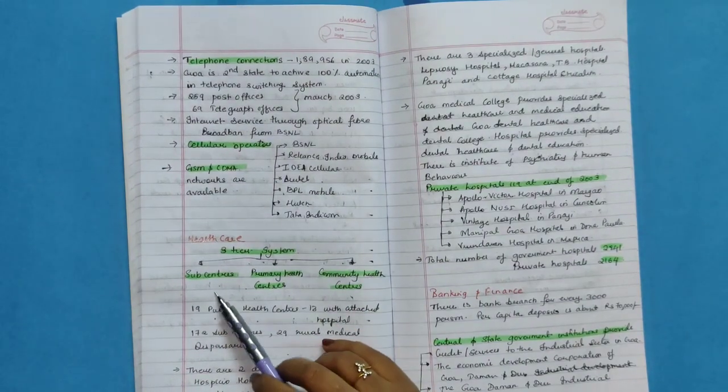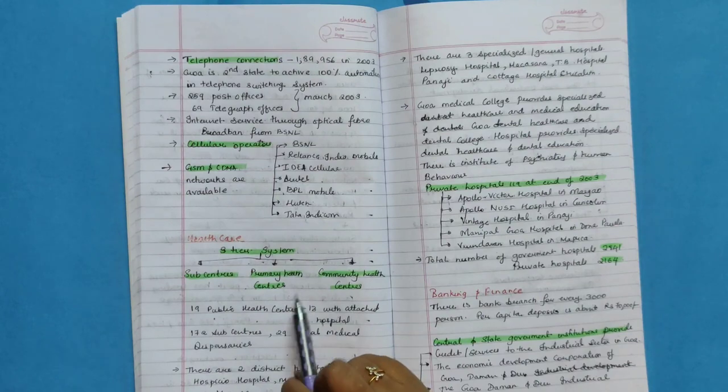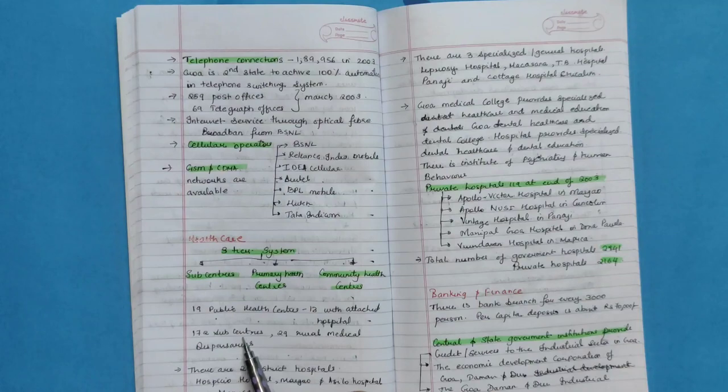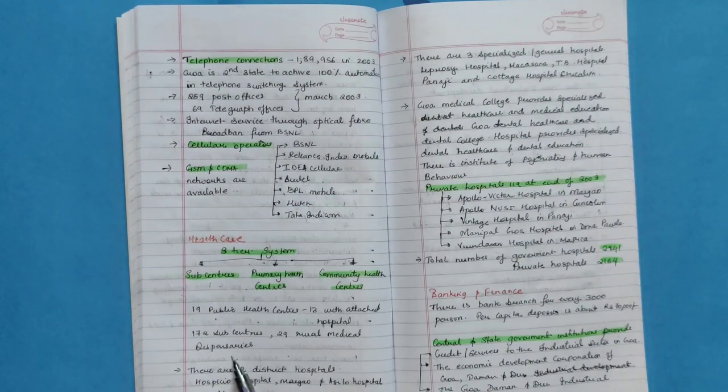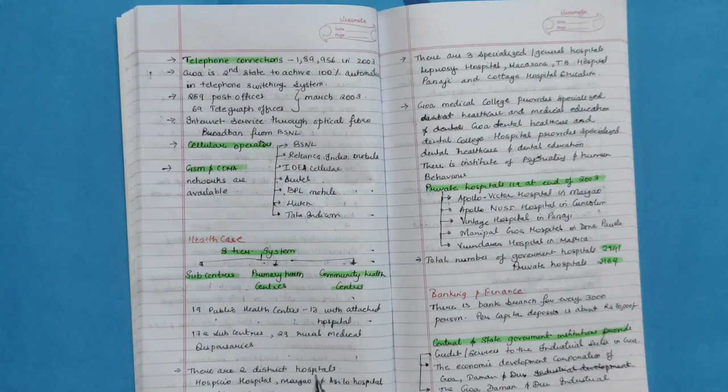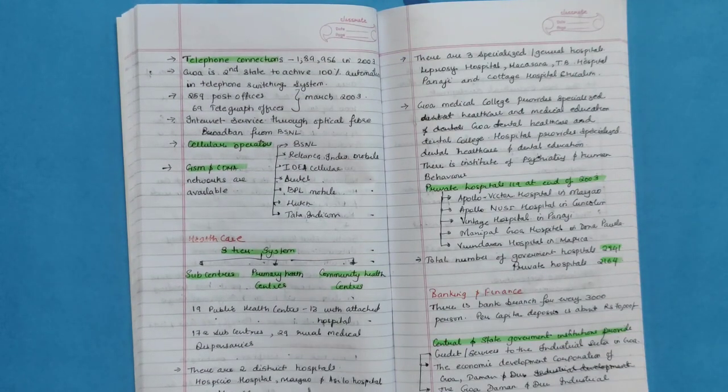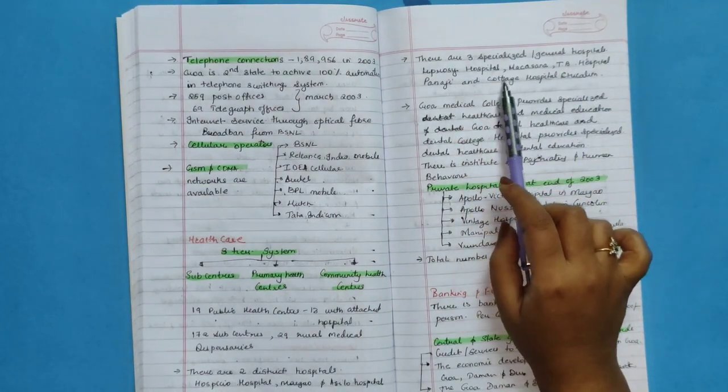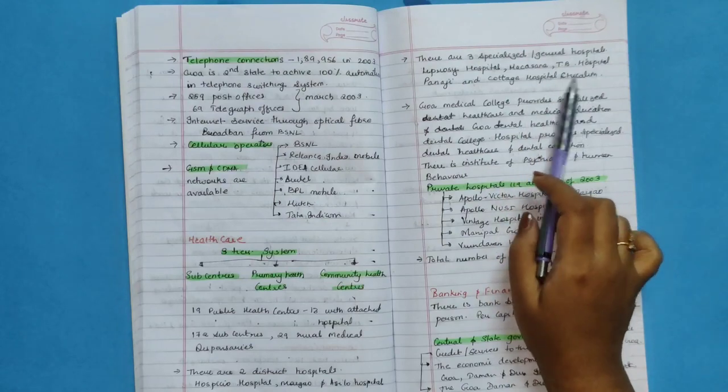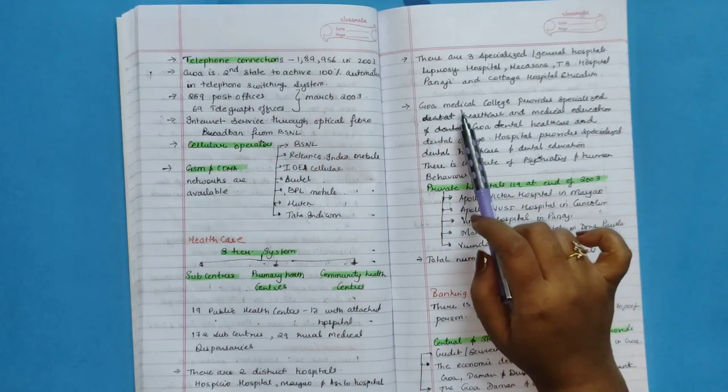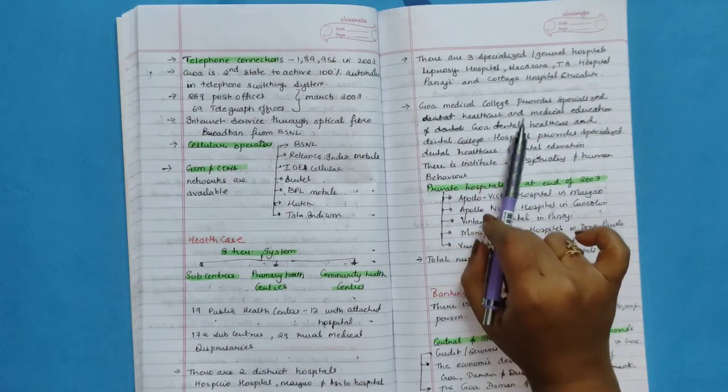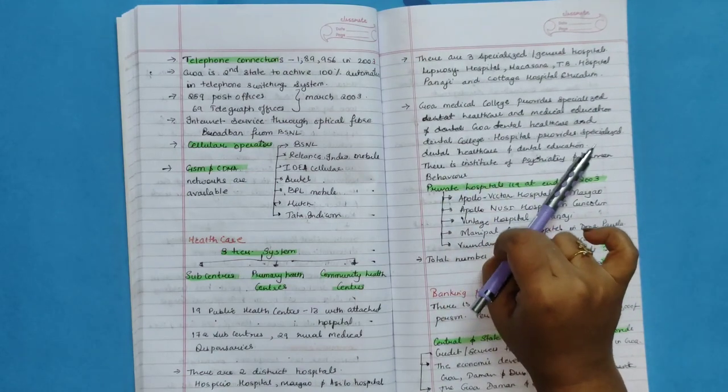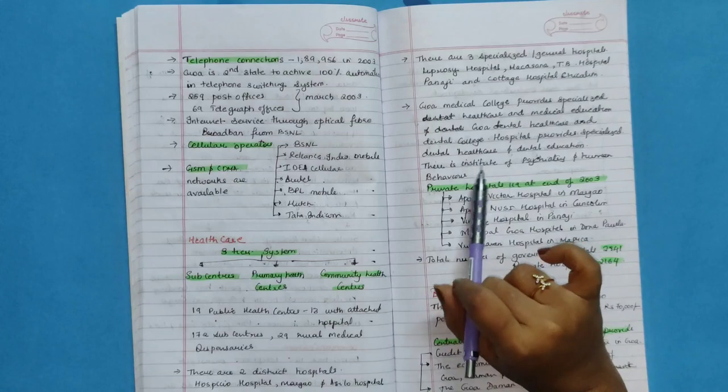Healthcare. It is a three-tier system: sub-center, primary health center and community health center. 19 public health centers, 13 with attached hospital. 172 sub-centers and 29 rural medical dispensaries. There are two district hospital: Hospicio Hospital, Margao and Asilo Hospital, Mapusa. There are three specialized or general hospital: Leprosy Hospital, TB Hospital and Cottage Hospital, Chicalim. Goa Medical College provides specialized health care and medical education and Goa Dental Health Care and Dental College Hospital provides specialized dental health care and dental education. There is Institute of Psychiatry and Human Behavior.